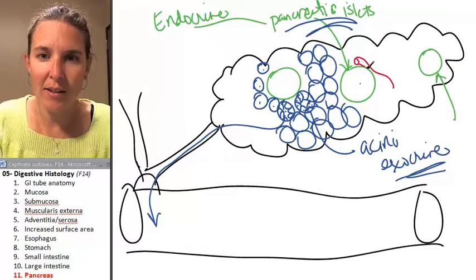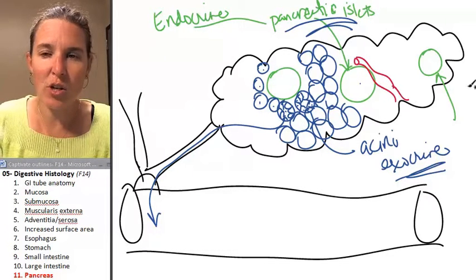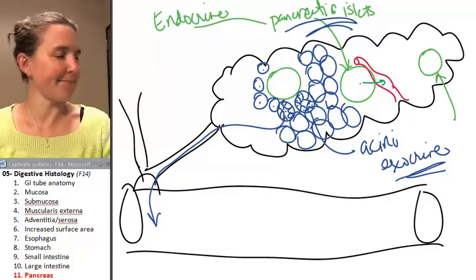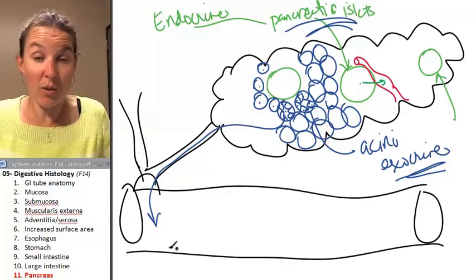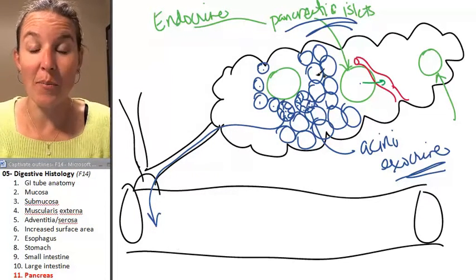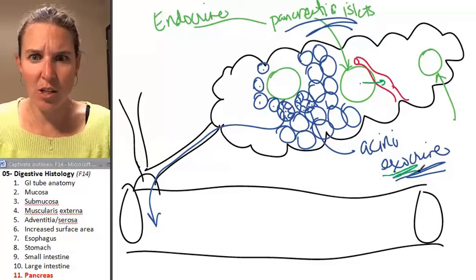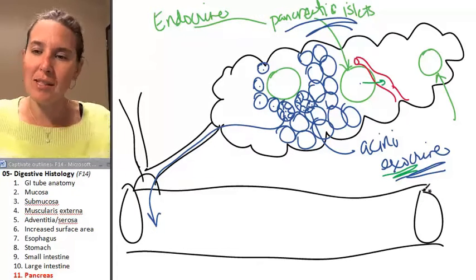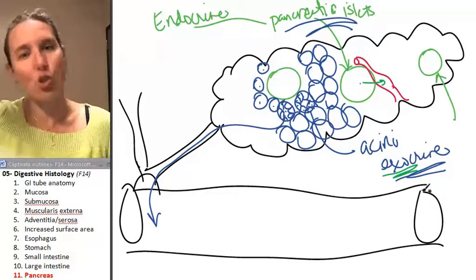Look, I'm going to draw it like this. Do my exocrine structures dump fluid into the blood? No, they dump it outside your body to the lumen of the duodenum because it's exocrine. That's the definition of an exocrine structure. Endocrine structures dump into the blood. That's the definition of the endocrine structure.